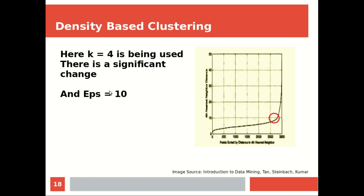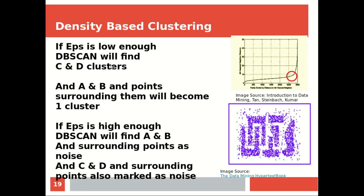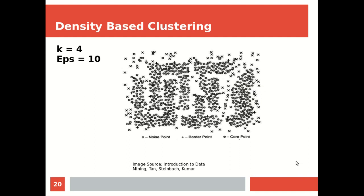For this example, k equals 4 and EPS equals 10, so the radius is 10. K equals 4 also means min points equals 4 for this dataset — these values will vary from dataset to dataset. If EPS is very low, DBSCAN will find two clusters but may combine them into one. If EPS is very high, it will find clusters A and B and all surrounding points, also finding C and D, with surrounding points marked as noise.